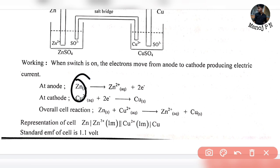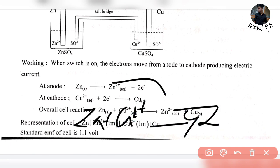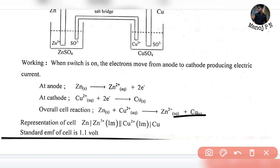Overall cell reaction: When we cancel the electrons because they cancel out, we get Zn + Cu²⁺ → Zn²⁺ + Cu.